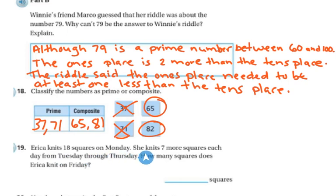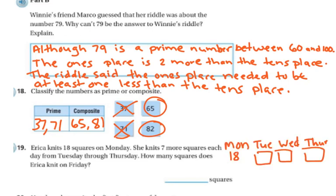Erica knits 18 squares on Monday. She knits 7 more squares each day from Tuesday through Thursday. How many squares does she knit by Friday? So on Monday, she has 18 squares. And if I add 7 more, I get 25. Then I add 7 more. I get 32. Then I add 7 more. And I get 39, so the answer is 39 squares.